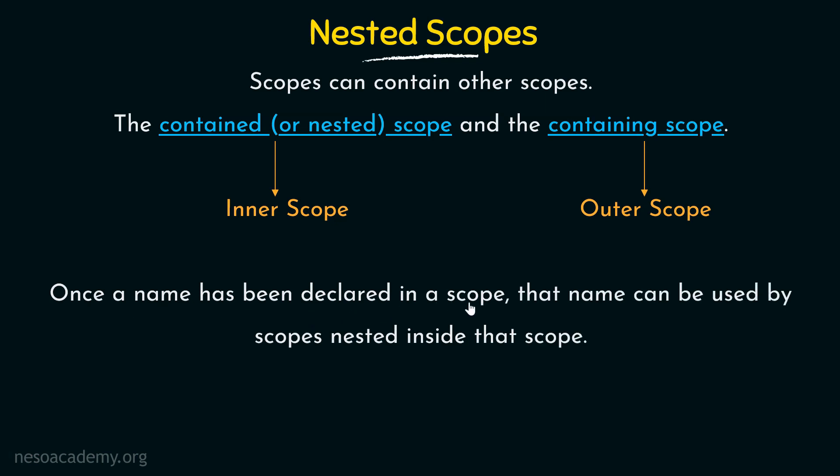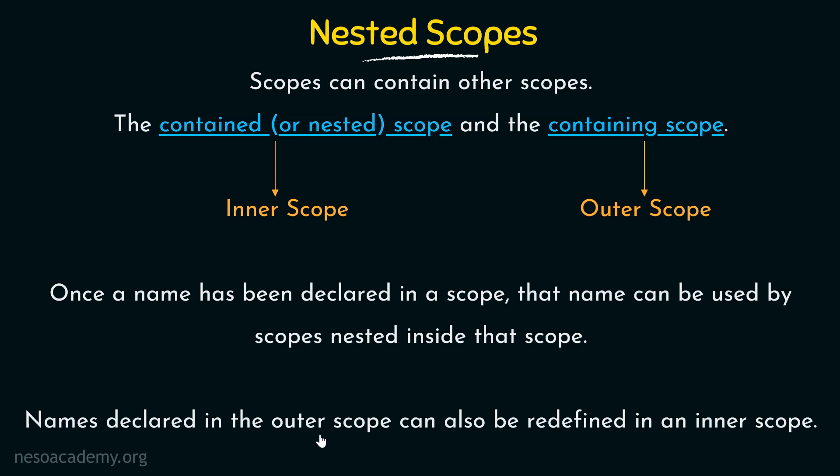Once a name has been declared in a scope, that name can be used by scopes nested inside that scope. So if we declare a name in an outer scope, all the inner scopes can also access those names. Additionally, names declared in the outer scope can also be redefined in an inner scope.